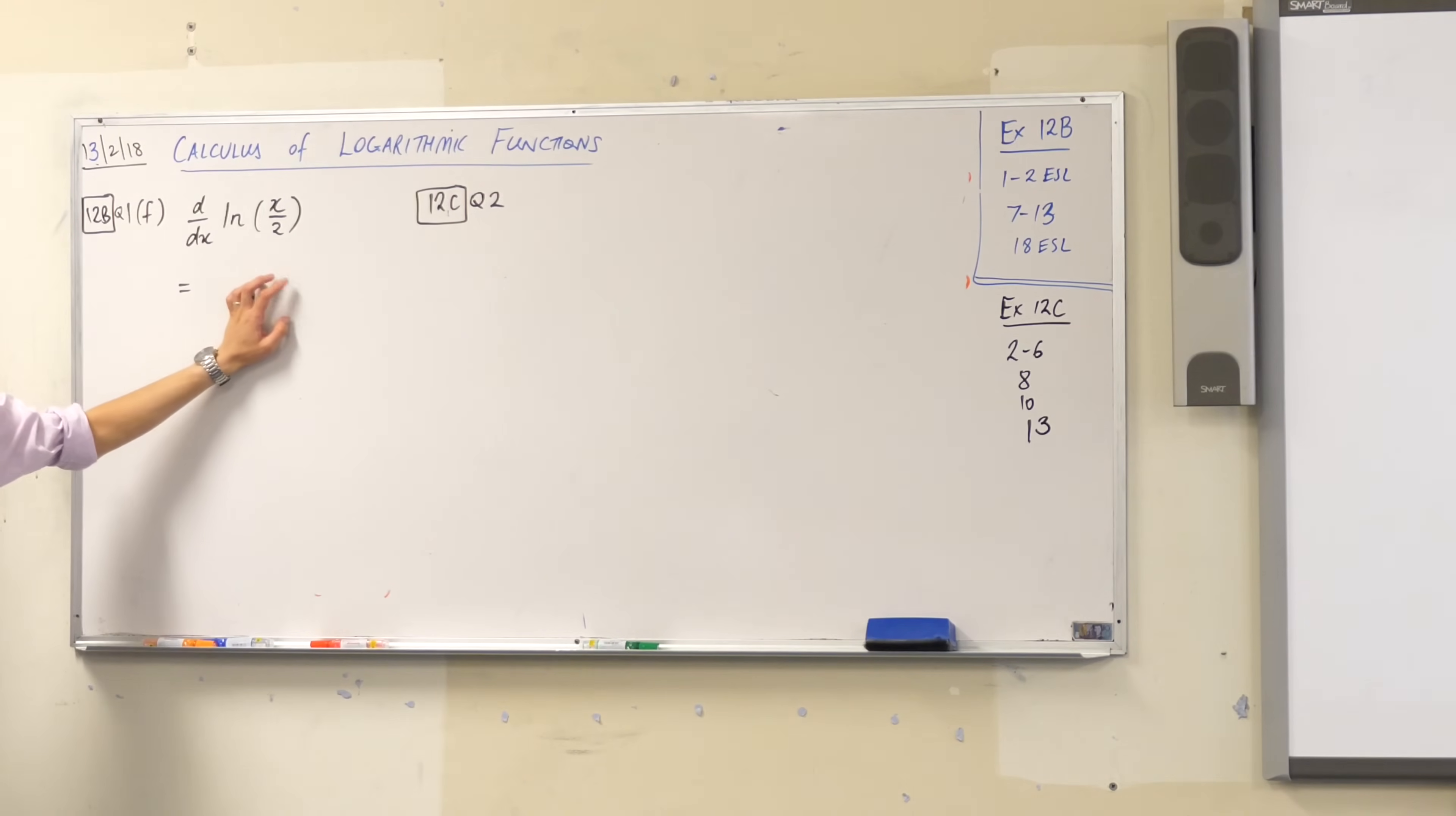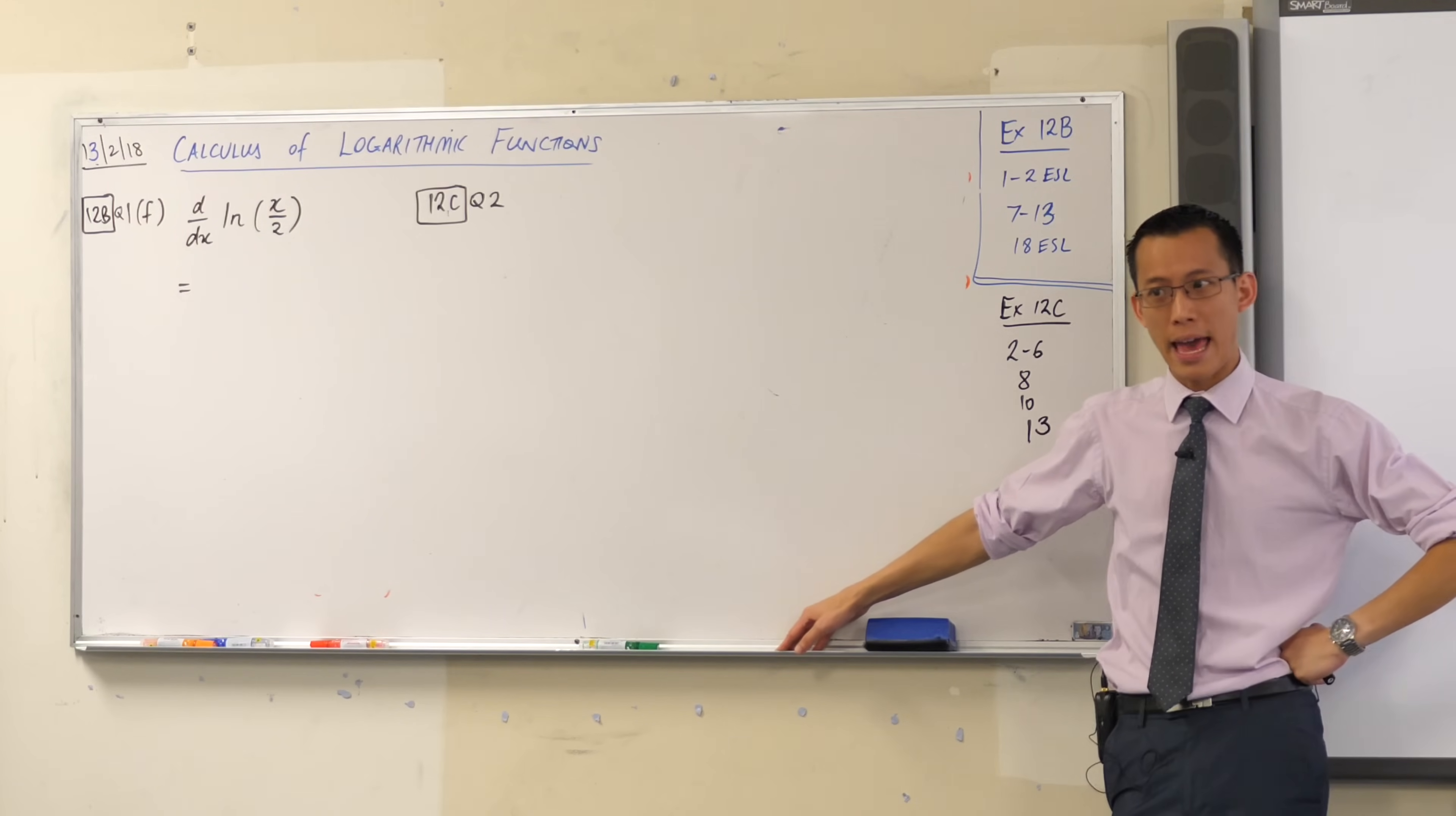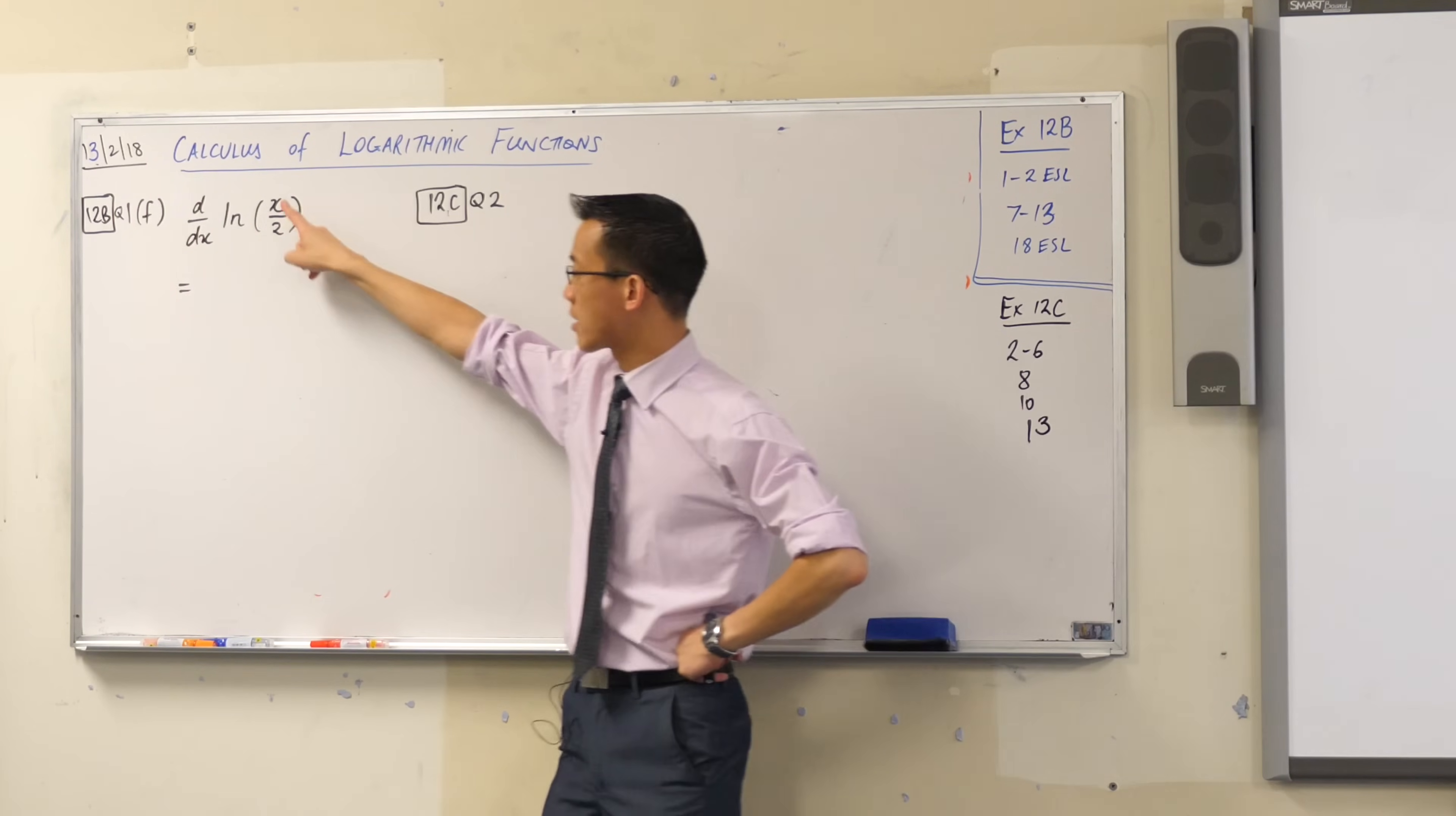Now this question here, maybe some of you went through it because it's early in the exercise and didn't bat an eyelid, but there's a lesson to learn here, a couple actually. So I just want to focus on it even though it's a remarkably simple question. We want to differentiate this log function and it's not just log x, simple log x and nothing else, it's got a tiny little adjustment here. It's x divided by 2.